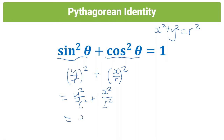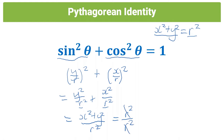Because the denominators are both r, we can add the numerators — that becomes x² + y² over r². We have x² + y² in the numerator, and that's also the definition for Pythagoras because x² + y² = r². So we can substitute r² there, giving us r² over r². These two cancel, giving us 1 over 1, which is 1. So we've proved the Pythagorean identity by substituting the Pythagorean theorem and our definitions for sine and cos.